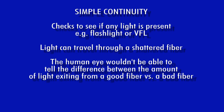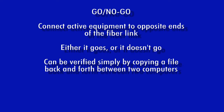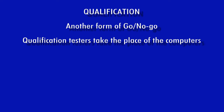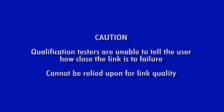Continuity is simply looking for the visual presence of optical power, such as with a flashlight or visual fault locator. However, just because light is making it to the end of a fiber does not mean the fiber is good — even a shattered fiber will pass light. Go-no-go is done by connecting communications equipment to a fiber link; either it goes or it doesn't. A qualification tester goes a step further by copying predefined data bit patterns across the link at different data rates to determine if any bit errors occurred, though a bit error measurement cannot tell you how close you are to failing.